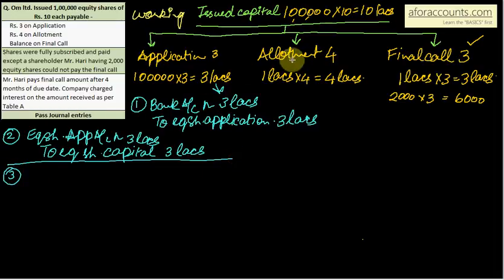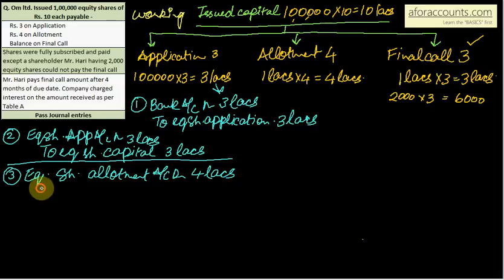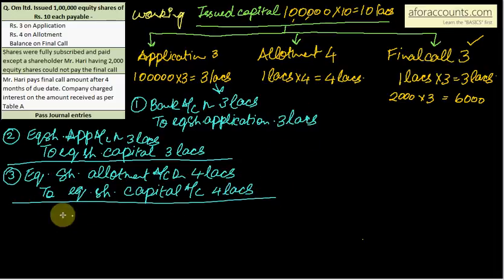Next, allotment due karne ki entry. Equity share allotment account debit to equity share capital 4 lakhs. Receive karo pura paisa. Bank account debit to equity share allotment 4 lakhs.